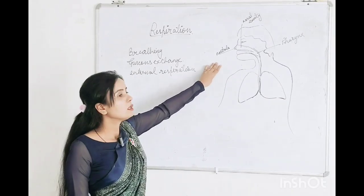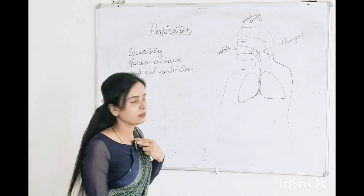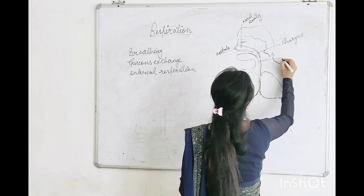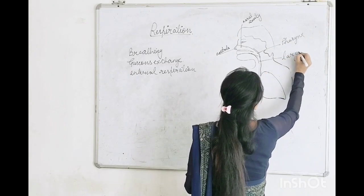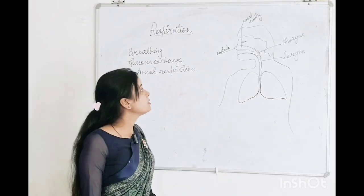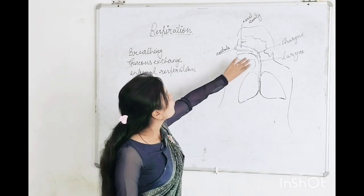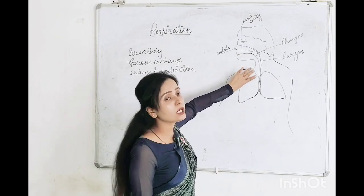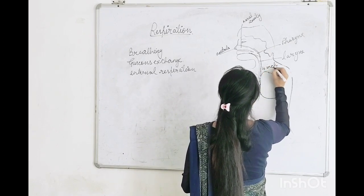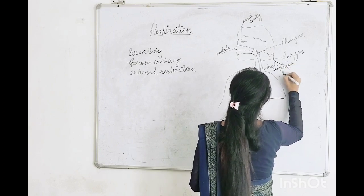If you open your mouth, you can see the pharynx — it is behind your tongue. After pharynx, the air goes to the larynx. Pharynx is followed by the larynx, which is the voice box. From here, this air passes into the four-inch-long tube called trachea.